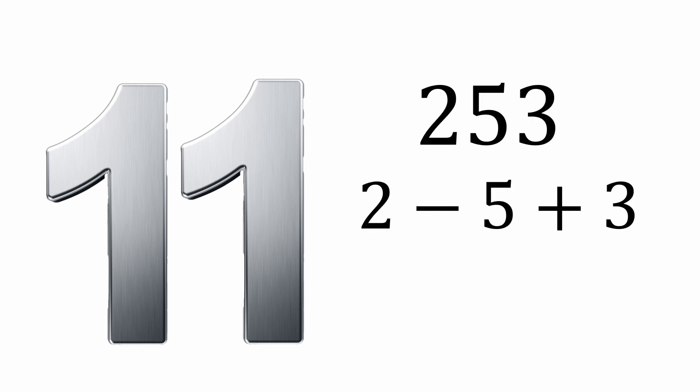The rule for 11 is pretty cool and probably the least known of the ones we've looked at so far. Let's test it on 253. Just put alternating signs between the digits. If the resulting expression adds up to zero or a multiple of 11, guess what? The number is divisible by 11.